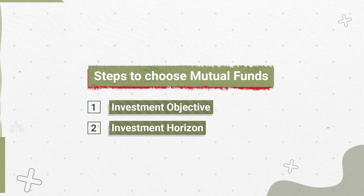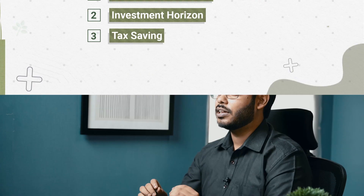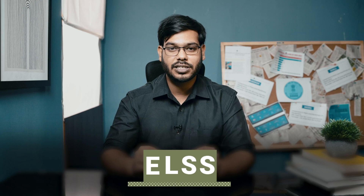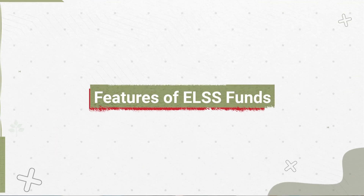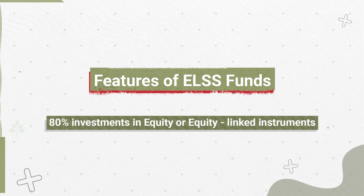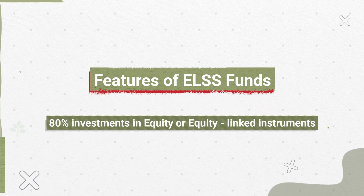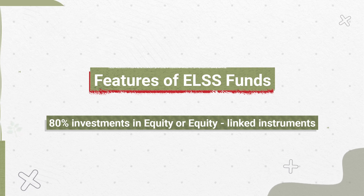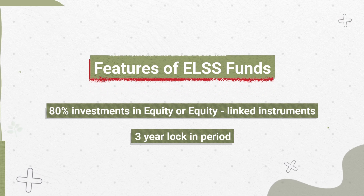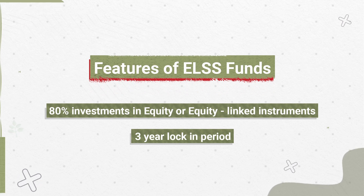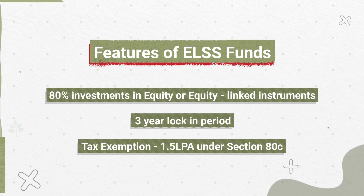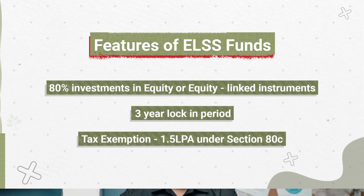The third thing to look at is the tax saving you can do using mutual funds. You cannot save tax by investing in every kind of mutual fund. However, there are specific kinds called ELSS mutual funds — equity-linked savings schemes. The fund manager invests more than 80% of the investment amount into equity or equity-related instruments. You have a statutory three-year lock-in, but they provide an opportunity to save up to ₹1.5 lakh every year under Section 80C of the Income Tax Act.